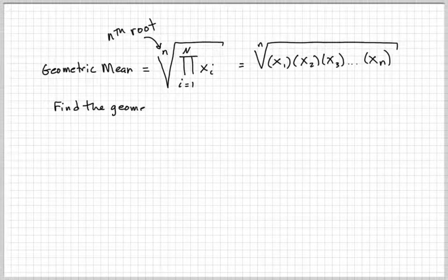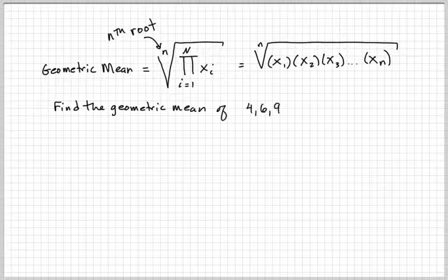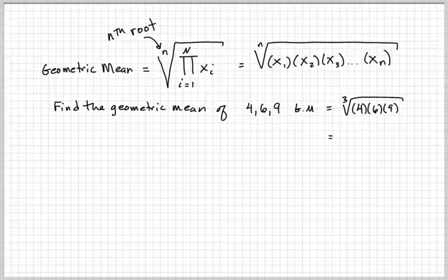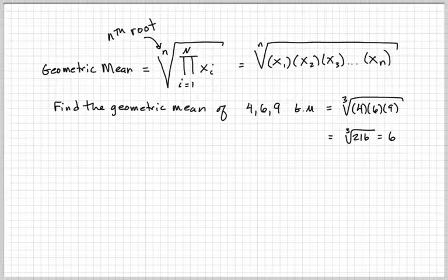For example, let's say you want to know the geometric mean of 4, 6, and 9. What you do is multiply 4 times 6 times 9, and then you take the third root because you have three items, three values. When you multiply that, it gives you 216. The third root of 216 is 6, and that's the answer.